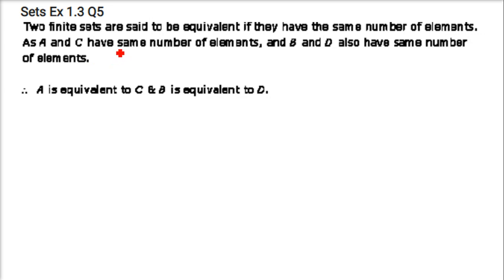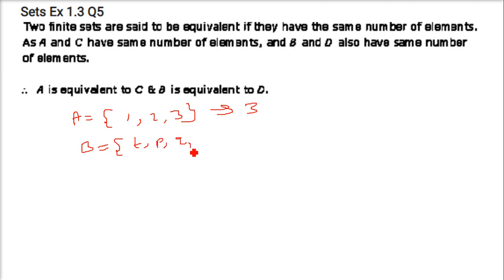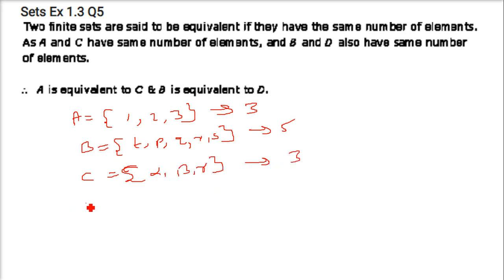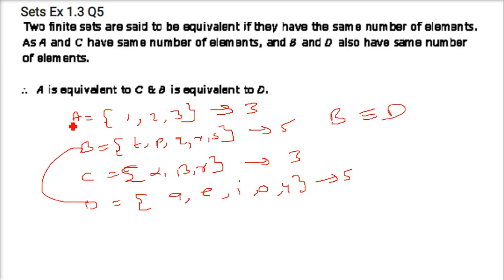Next: pair the equivalent sets. Equivalent sets have the same number of elements. A = {1, 2, 3} has 3 elements. B = {t, p, q, r, s} has 5 elements. C = {α, β, γ} has 3 elements. D = {a, e, i, o, u} has 5 elements. So B and D are equivalent, and A and C are equivalent.